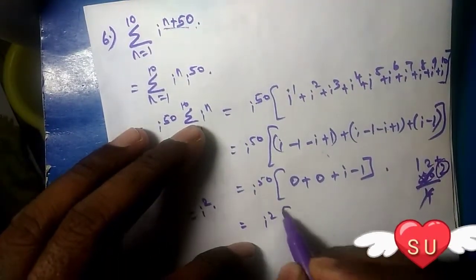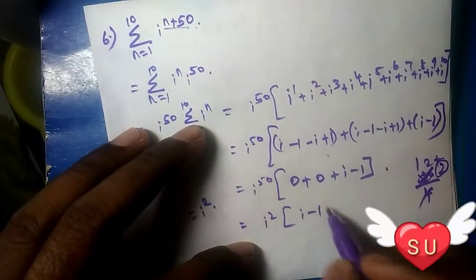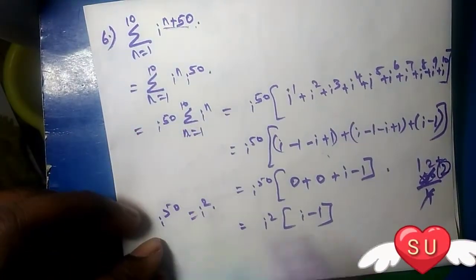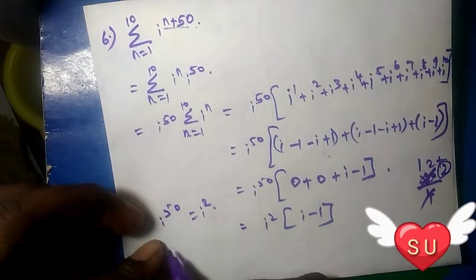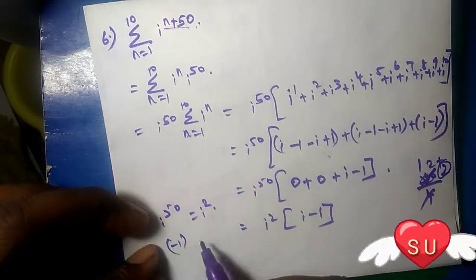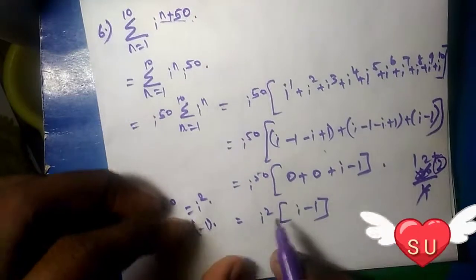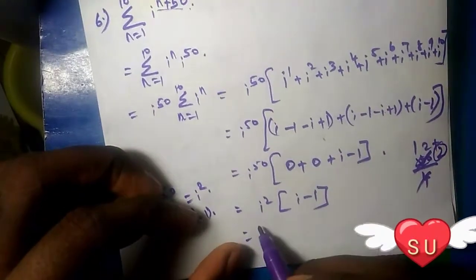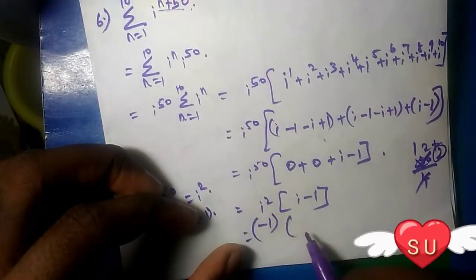The answer is -1. Since i^2 equals -1, we have -1 times (i - 1). So the final answer is -1, or we can write it as 1 - i.